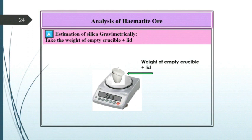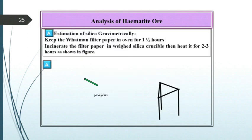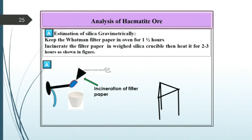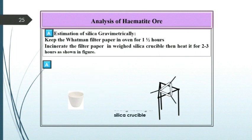For the incineration process, take the weighed silica crucible and fold the Whatman number 41 filter paper as shown in the video. Ignite it till it becomes white, then transfer all this filter paper in the crucible. Then heat this crucible strongly on a blue flame for two to three hours.